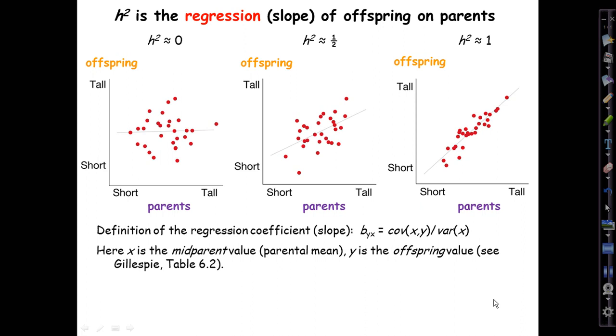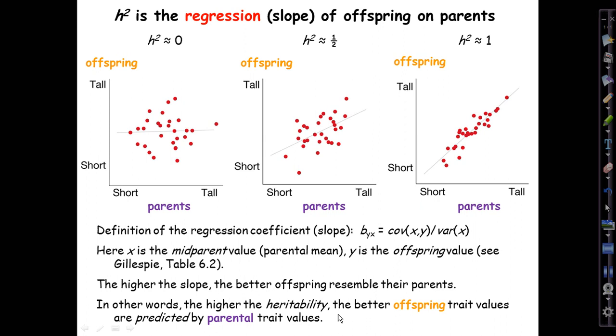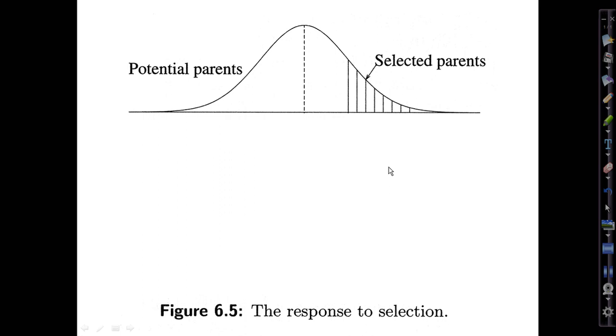Gillespie's Table 6.2 should be consulted here to make this completely clear. Under that condition, the slope is an estimate of the narrow-sense heritability. Of course, the higher it is, the better offspring resemble their parents. The higher the heritability, the better the offspring trait values are predicted by the parental trait values. And that's the connection with selection.